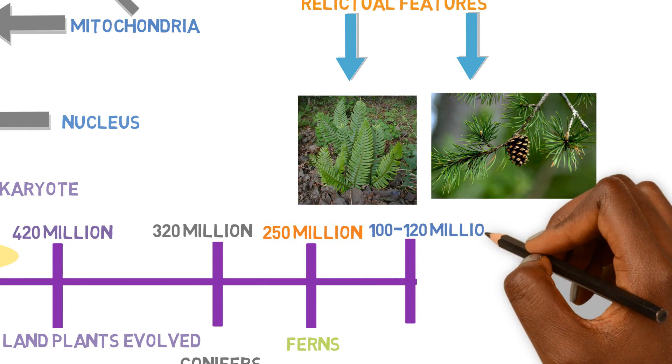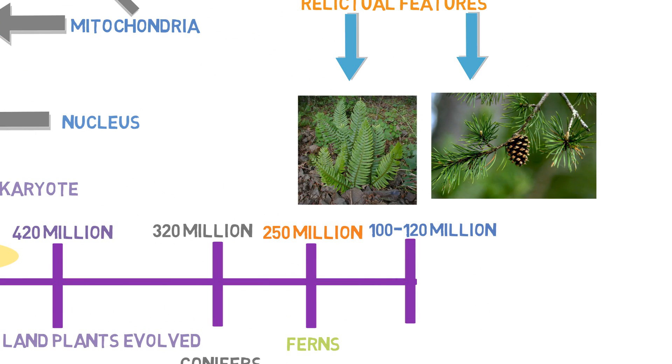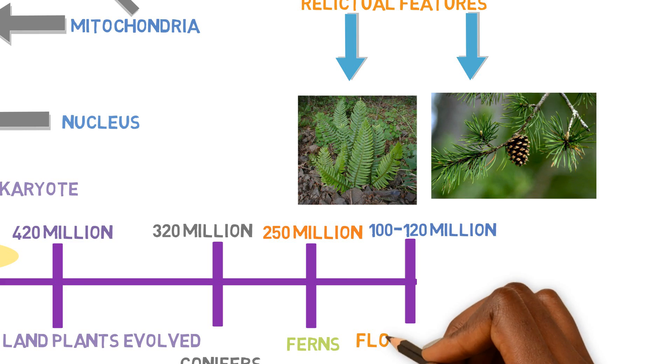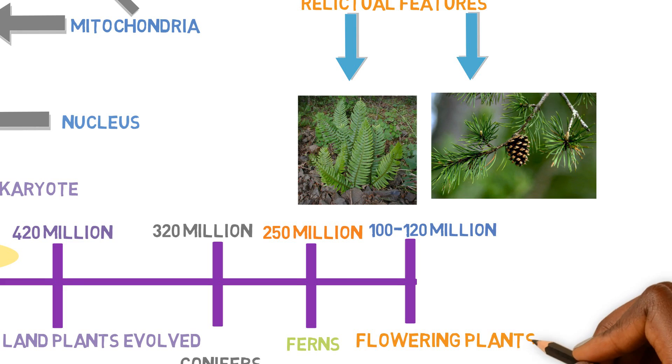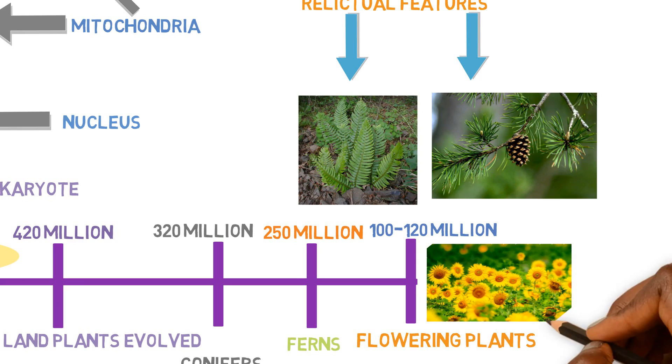From about 100 to 120 million years ago, we get the last evolved group of plants known as flowering plants. These are the most important, as far as humans are concerned, the most important group of plants to develop. Obviously, millions of years after, you get the evolution of vegetables, fruits, and a variety of other edible plants that all come from these flowering plants.